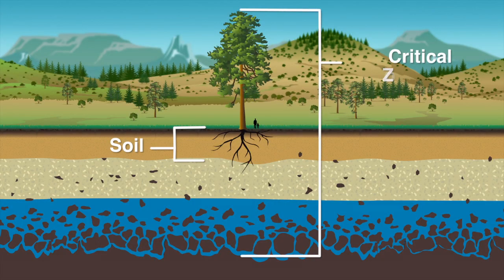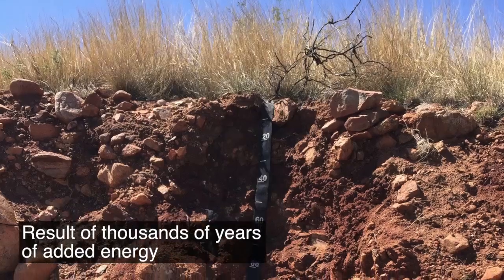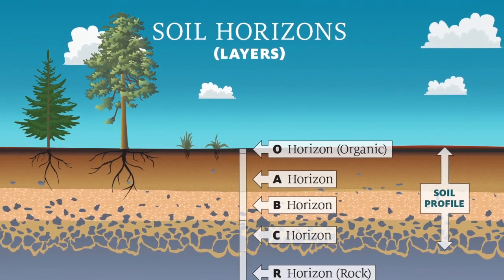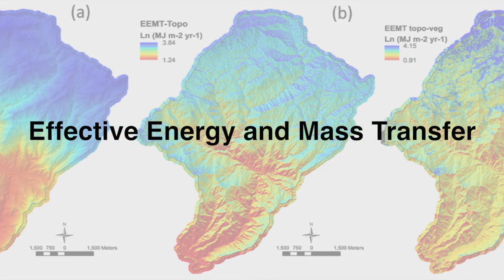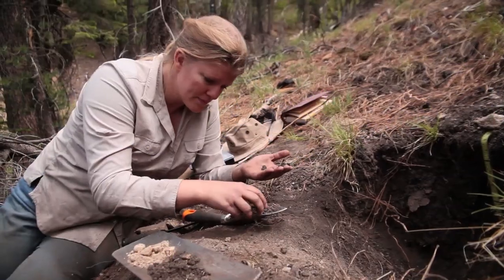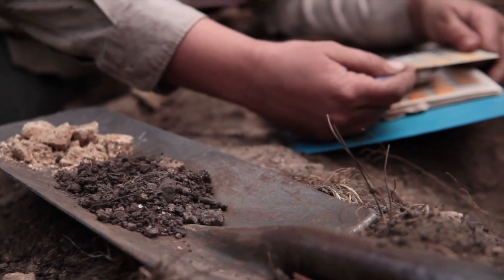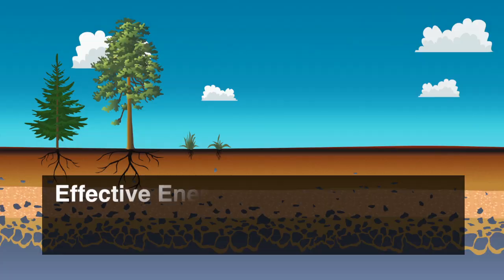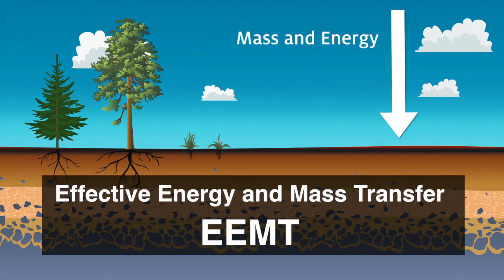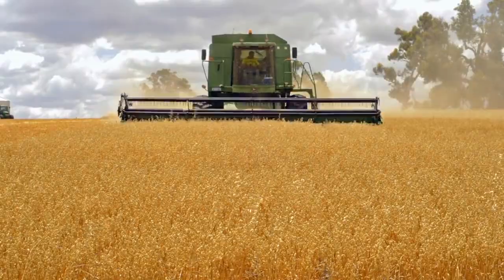Soils are at the heart of the critical zone, the zone that supports life on Earth. Across the entire surface of the Earth, we can observe this process of soil formation and the increasing complexity of soil structure as energy is added. Using the effective energy and mass transfer approach, scientists can calculate the amount of energy that has been transferred into the ground across a region like a watershed. They can describe the level of soil development, and they can calculate the movement of water through the ground. EEMT is a good way to understand how soils form so we can make better decisions about how to sustain healthy soils.